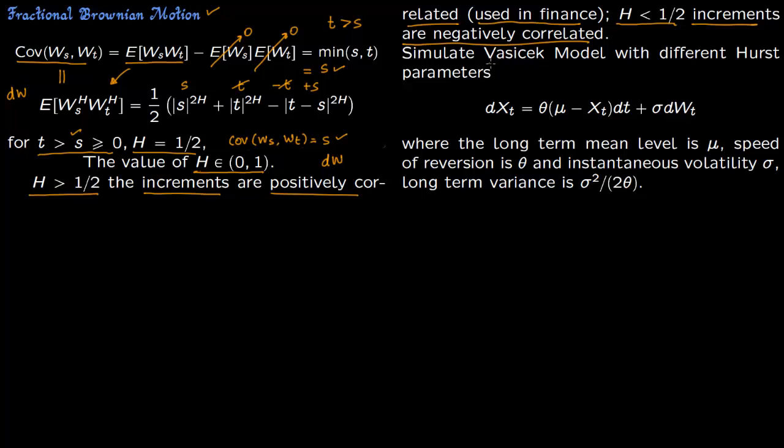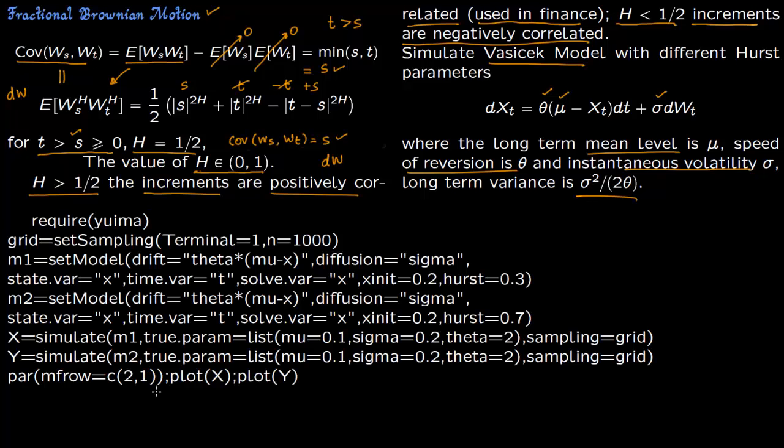Now we are going to show this in action. We are going to simulate the Vasicek model with different Hurst parameters. So again for the Vasicek model, notice that you have three constants: theta, mu, and sigma. Mu is the mean, long term mean, theta is the speed of reversion, and sigma is the instantaneous velocity. And long term variance is sigma squared by 2 theta. So this is the model.